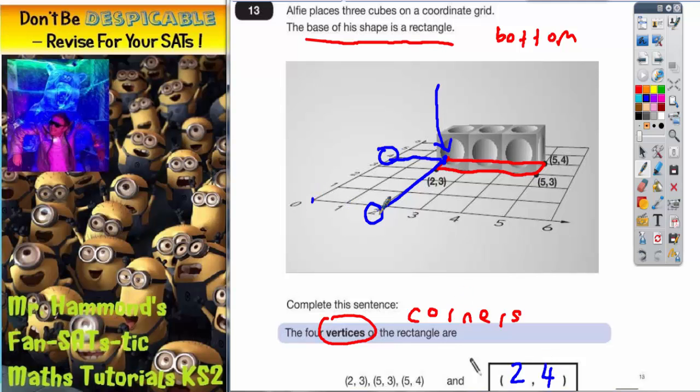Just to double-check, starting from zero we go 1, 2 along, and then 1, 2, 3, 4 up, and we get that missing coordinate at the back of that rectangle. Final answer: (2, 4).